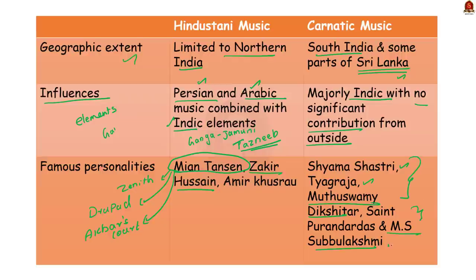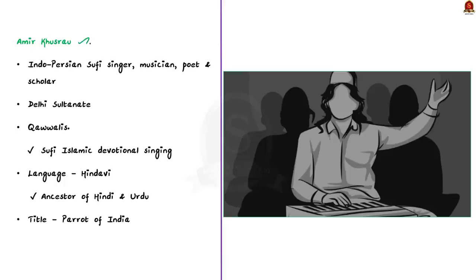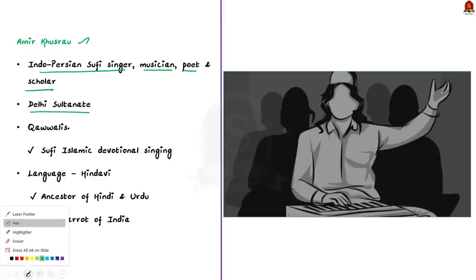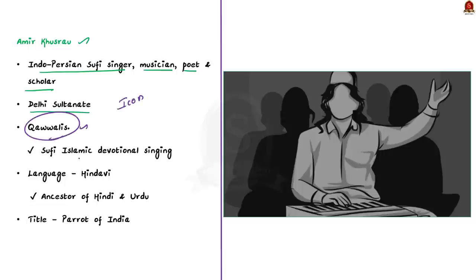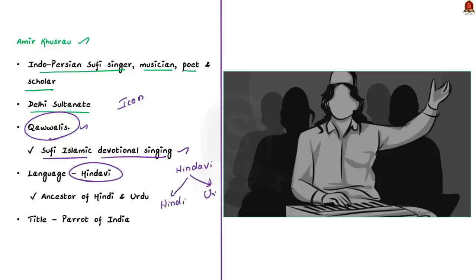We should also see about Amir Khusro, one of the most important singers of the Indian subcontinent. Amir Khusro was an Indo-Persian Sufi singer, musician, poet, and scholar who lived under the Delhi Sultanate. He is an iconic figure in the cultural history of the Indian subcontinent, known today for his famous Qawwalis — a form of Sufi Islamic devotional singing. He sang in Hindavi, a local dialect which later developed into Hindi and Urdu separately. Due to his astonishing singing skills, he is called the 'Parrot of India.'